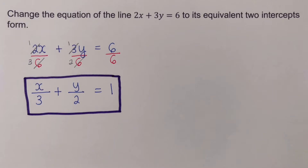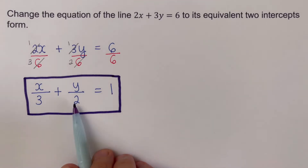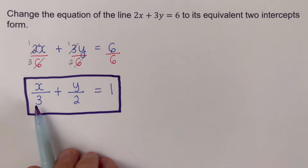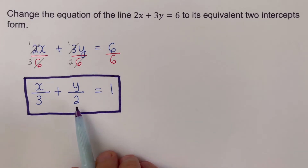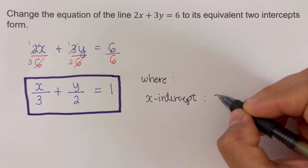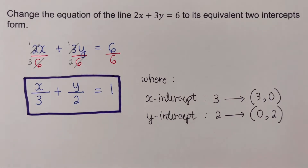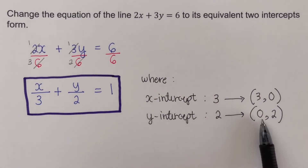We can see that the x-intercept is 3 and the y-intercept is 2. This tells us the line crosses the x-axis at 3 and the y-axis at 2. So the x-intercept coordinate is (3, 0) and the y-intercept coordinate is (0, 2).